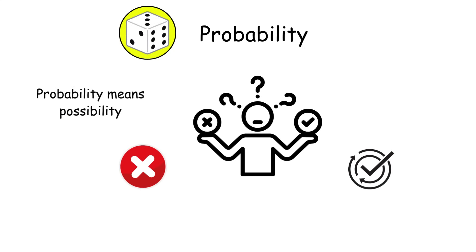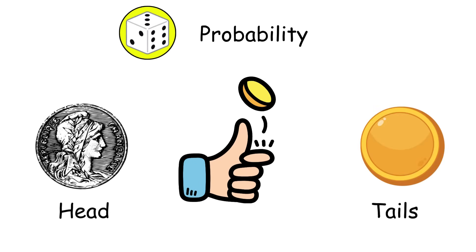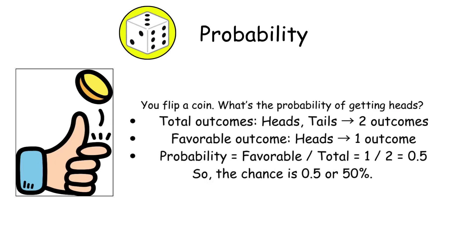Probability. Probability means possibility. It is a part of math that measures how likely an event is to happen, using a number between 0 and 1. It predicts the chances of different outcomes in random situations. For example, when flipping a coin, there are two outcomes: heads or tails. The probability is calculated by dividing the number of favorable outcomes by the total possible outcomes.